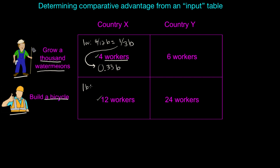For bicycles in Country X, twelve workers are needed. How many watermelons could those twelve workers have produced? Twelve divided by four, because three times as many workers are needed to produce a single bicycle as are needed to produce a thousand watermelons. So the opportunity cost of bicycles is three thousand watermelons — the twelve workers needed to produce a bicycle could have produced twelve over four watermelons.